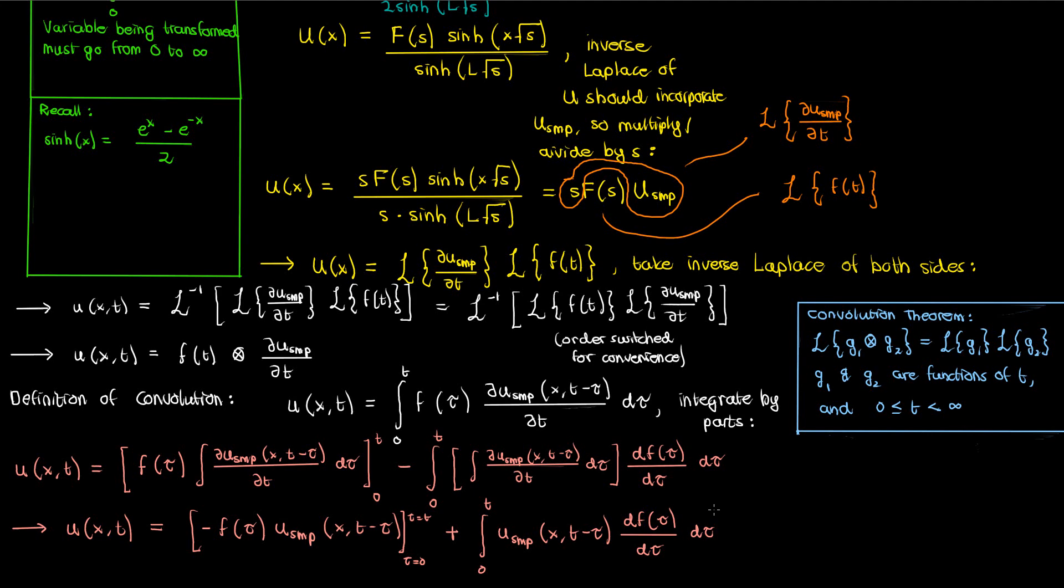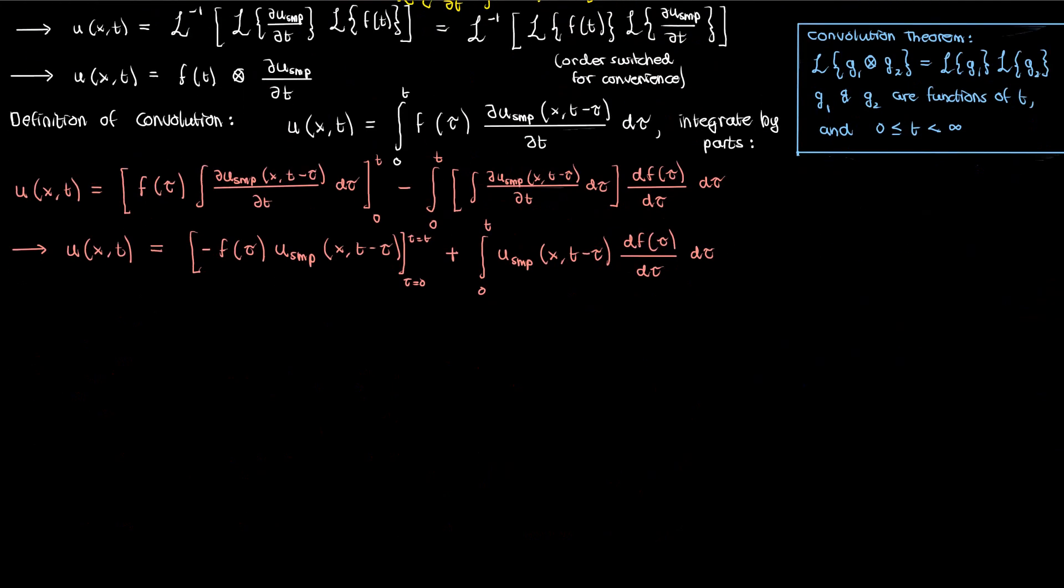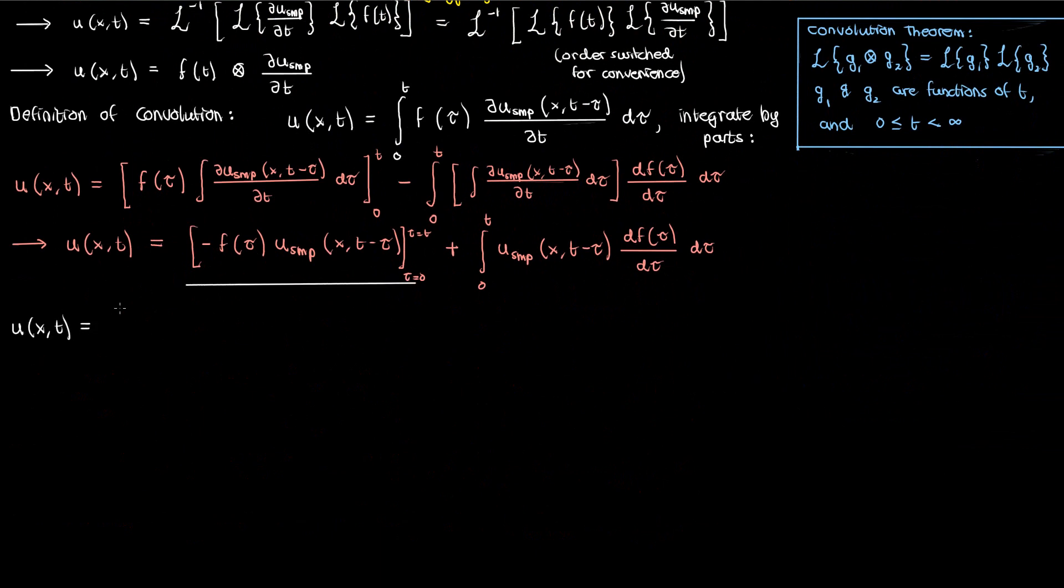Anyway, if we use that rule, U simplifies to the following. If we now apply the limits here, we'll get negative F of T times U sub SMP at X comma zero plus F of zero times U sub SMP at X comma T. Once again, the initial condition on U sub SMP is zero, so the first part cancels.